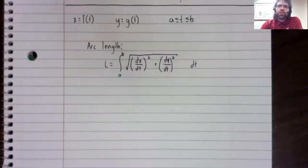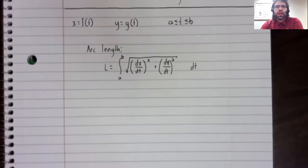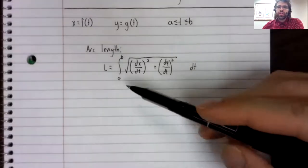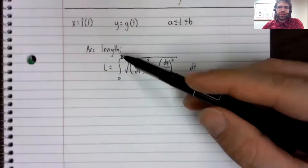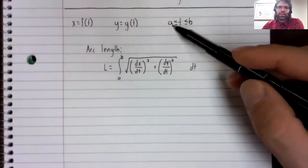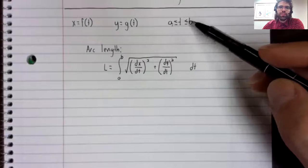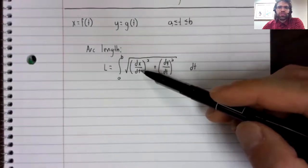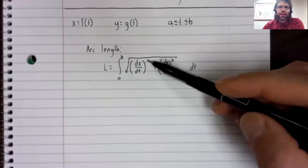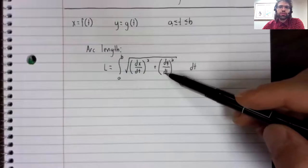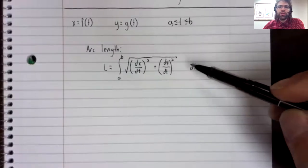I don't think I want to spend the time deriving the arc length formula in detail. I'll just state it. The arc length is the integral from A to B, where A is our initial time and B is our terminal time, of the derivative of x with respect to t squared plus the derivative of y with respect to t squared, dt.